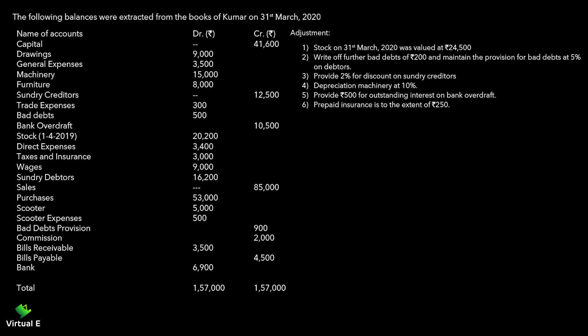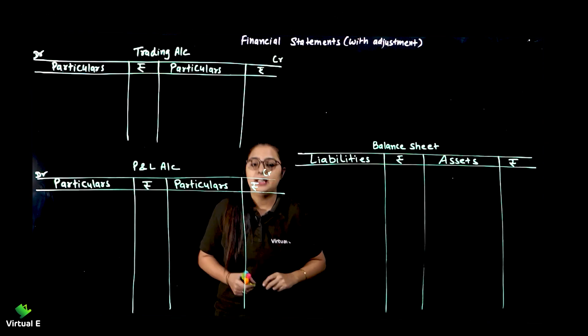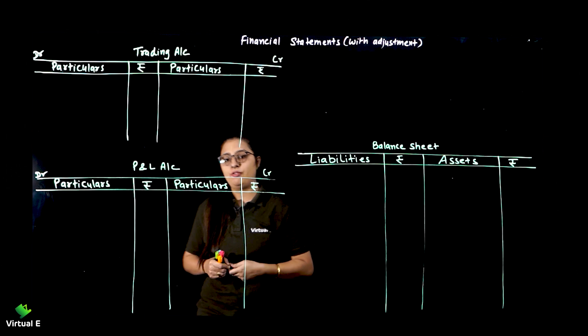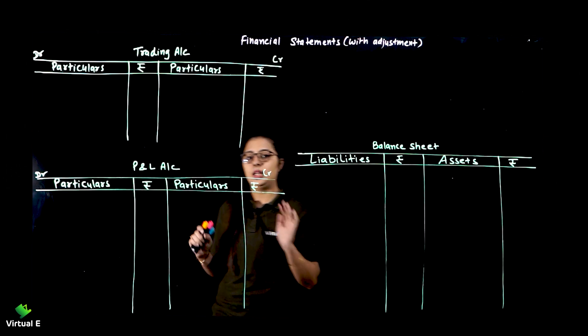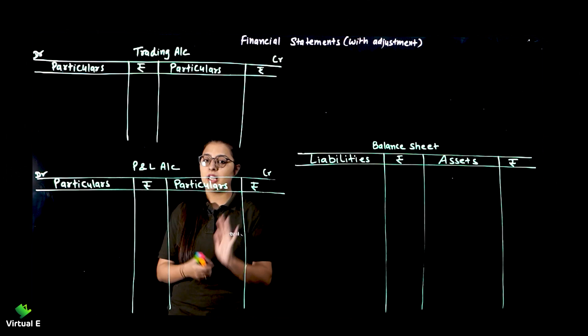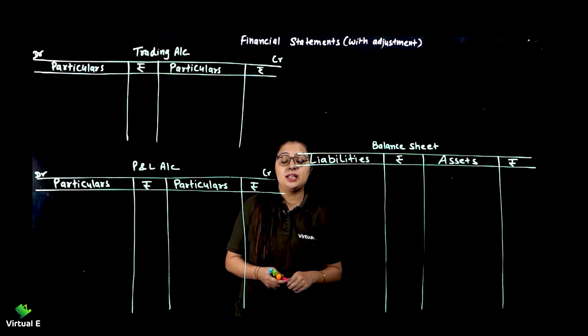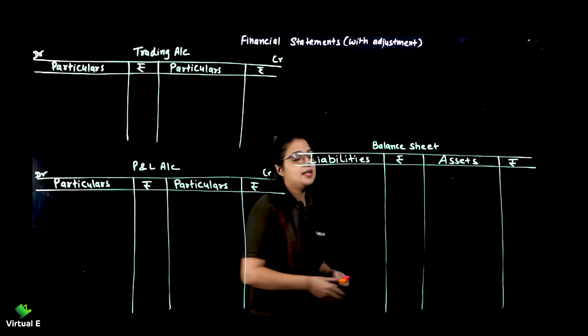Let's practice - take out your notebook and write along. You can see clearly: trading account, profit and loss account, and balance sheet - same format. First make the format on separate pages so you can write comfortably. First we will do all the adjustments.